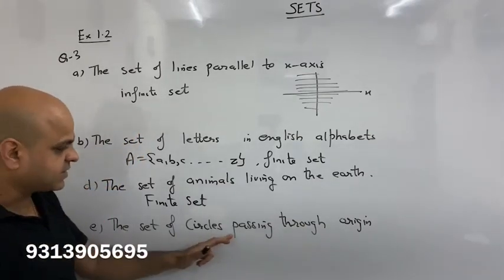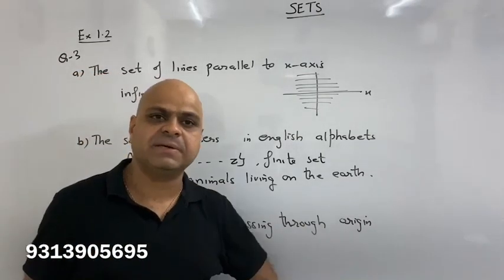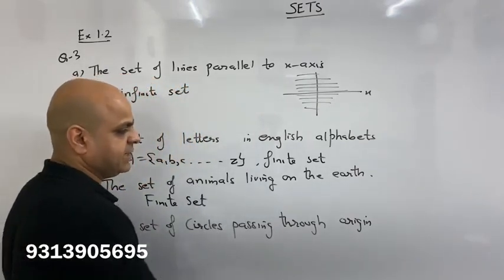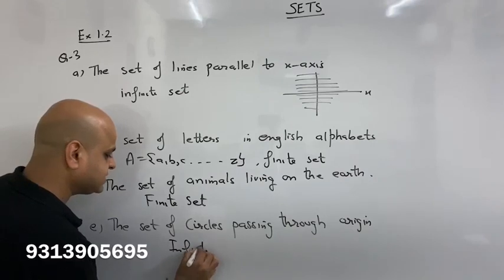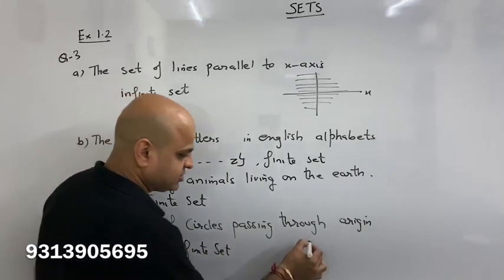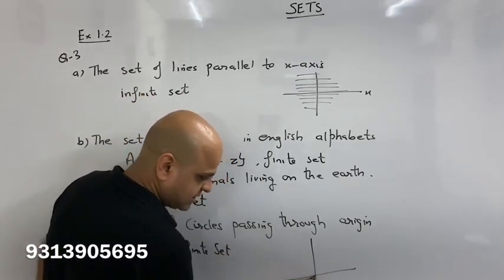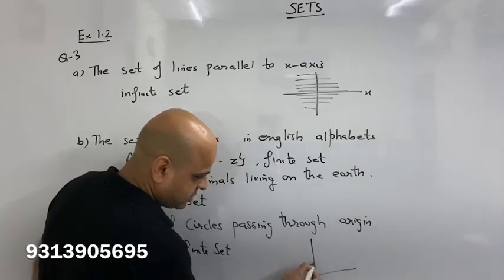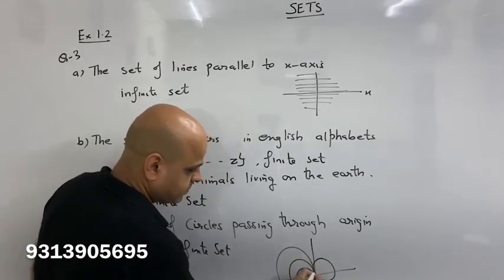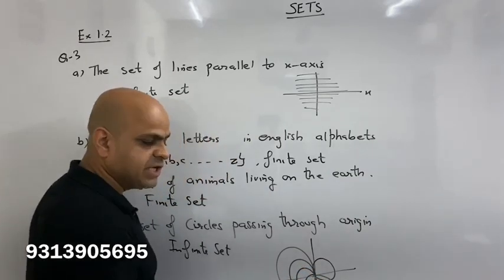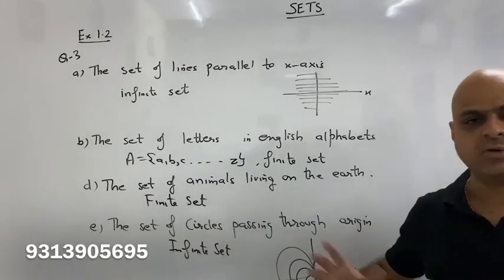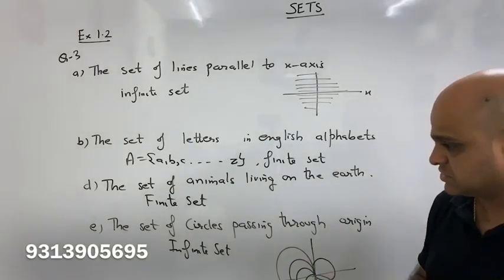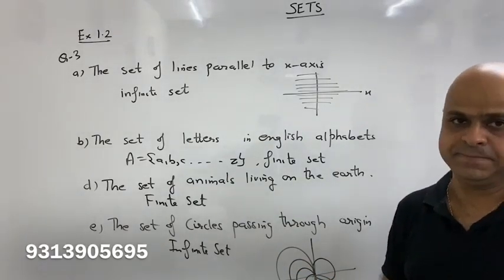Set of circles passing through the origin — how many circles can pass through the origin? Infinitely many. Draw circles of different sizes all passing through the origin — you can keep drawing more and more. So this is also an infinite set.